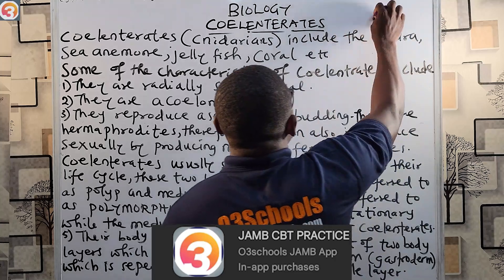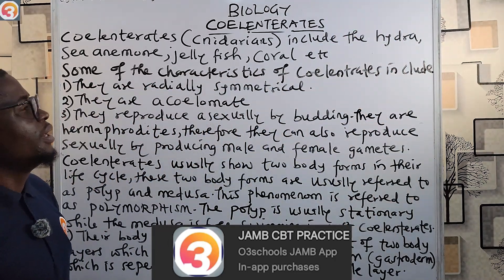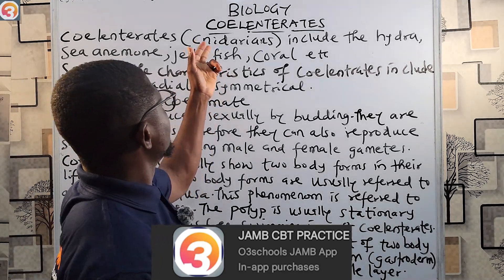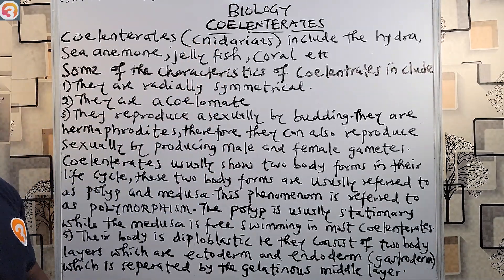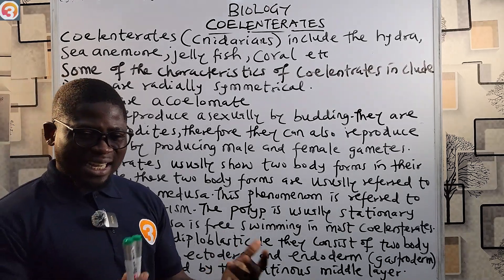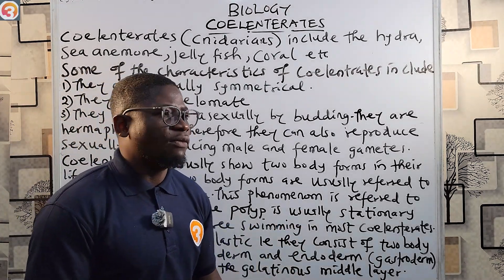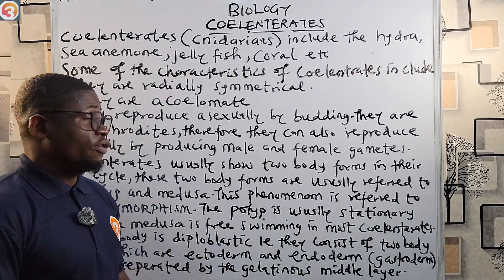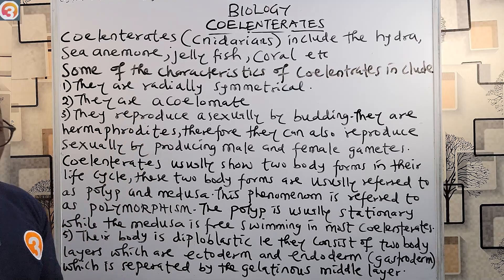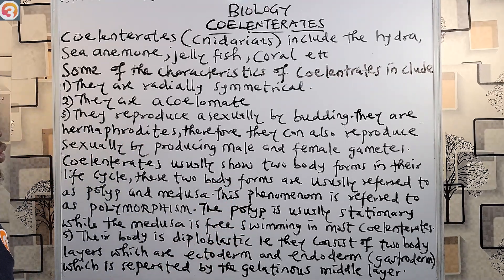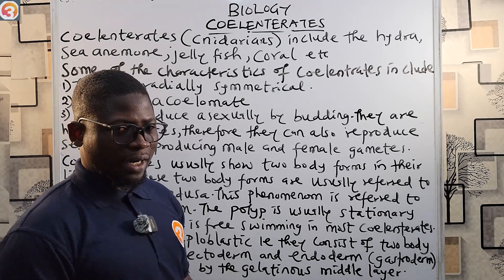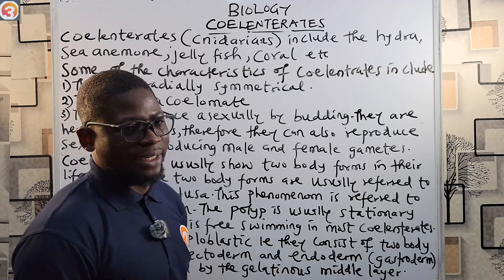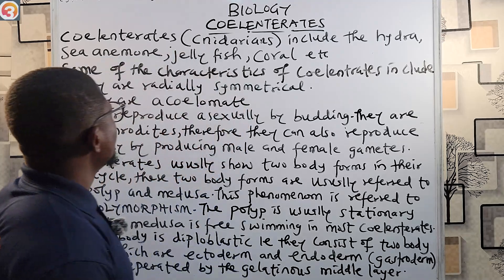Now let's look at phylum Coelenterata. Coelenterates are also covered under cnidarians. Examples include the hydra, the sea anemone, the jellyfish, and the coral. These are examples of organisms that belong to the phylum Coelenterata.